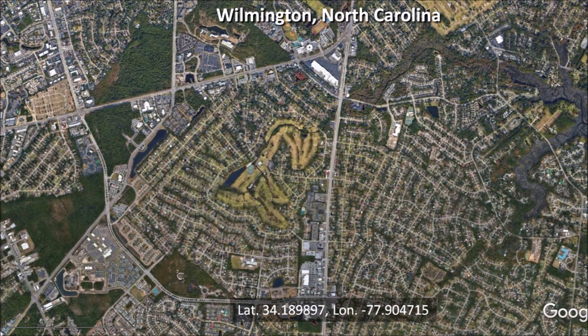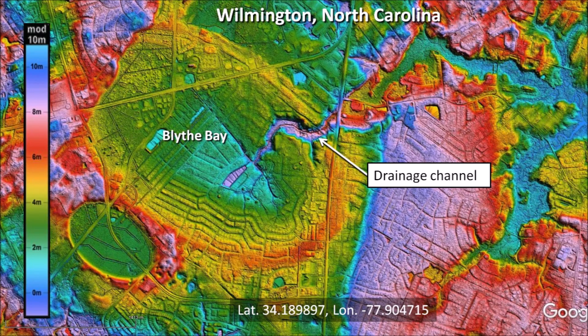This presentation discusses some cities that have been built on top of the Carolina Bays. A satellite image of Wilmington, North Carolina shows only the streets of a residential neighborhood. Looking at this image, we would not know that this is the center of a large Carolina Bay. A LiDAR image of the same area reveals several Carolina Bays, the largest of which is Blythe Bay with a length of 2,880 meters, or about 1.8 miles.